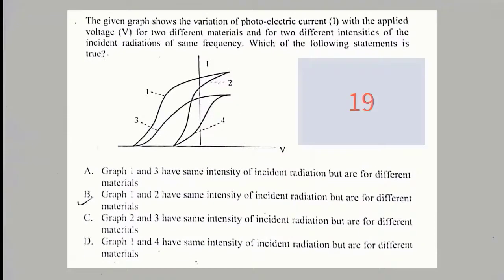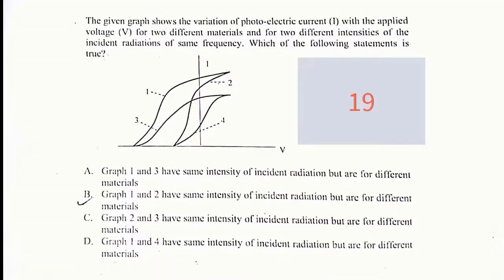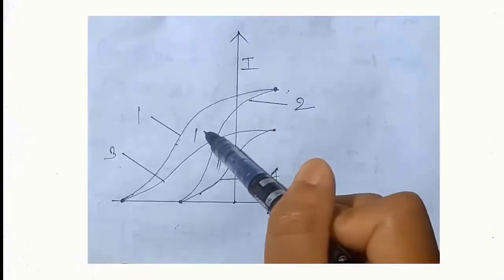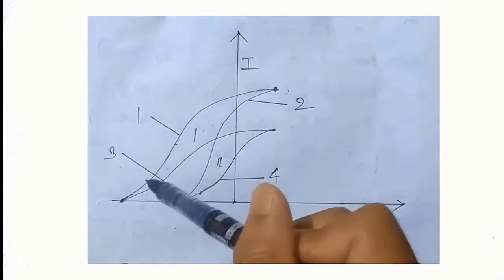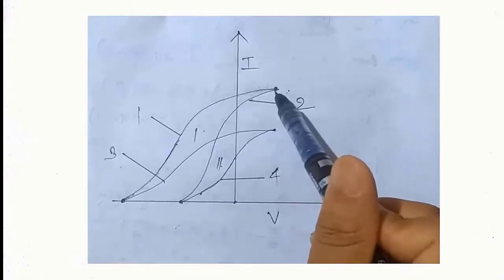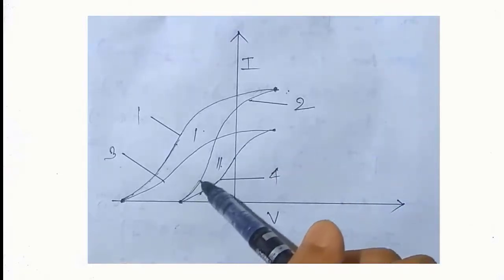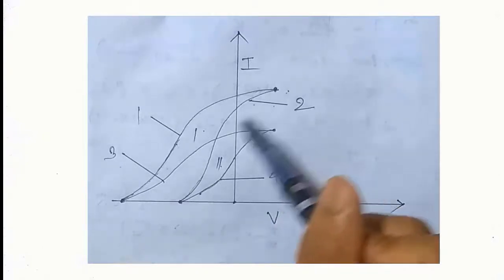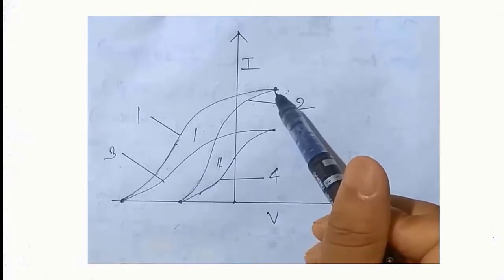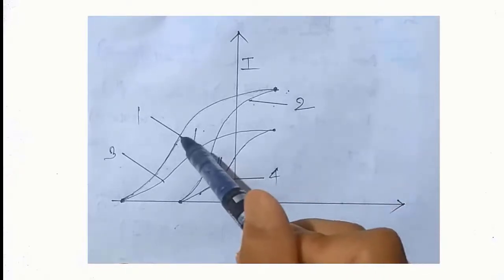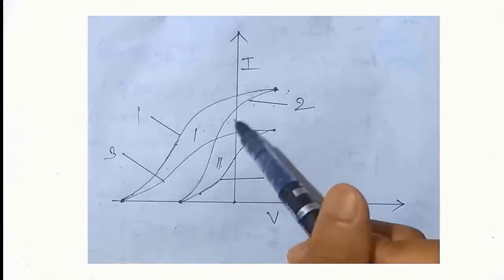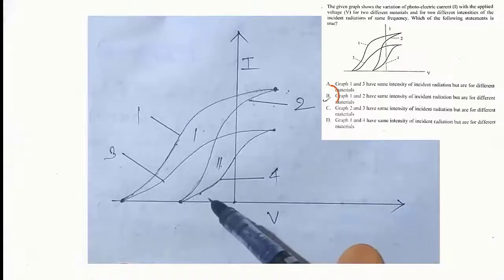In this question, the graph shows the variation of photoelectric current I with applied voltage V for two different materials and two different intensities. The frequency of incident radiations is the same. We can see that this is material 1 and this is material 2. Graph 1 of material 1 and graph 2 of material 2 have the same intensity. From this we can conclude that option B is the correct statement.